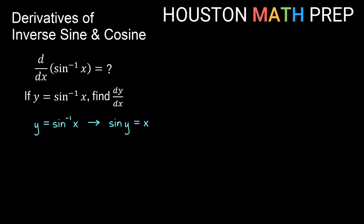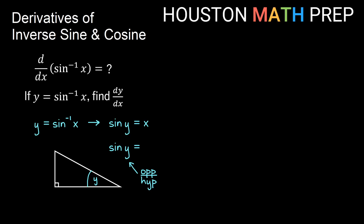If we have sine of y equal to x, that's actually telling us information about a right triangle, treating y as an angle inside of the right triangle. Remember that sine of something is the opposite side over the hypotenuse side. So sine of y being opposite over hypotenuse — writing x as a fraction x over 1 — x is the opposite side and 1 is the hypotenuse. Using the Pythagorean theorem, the missing side is the square root of 1 minus x squared.